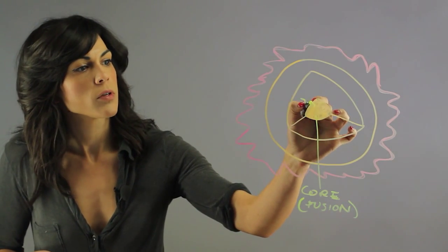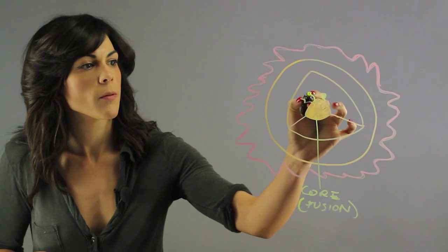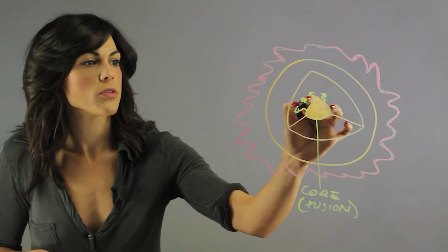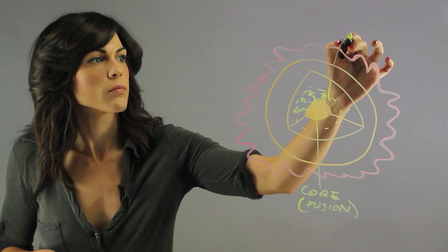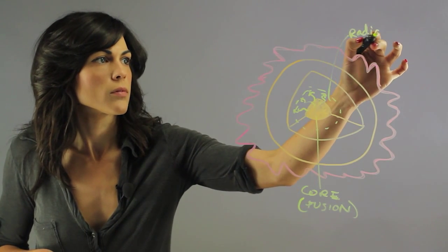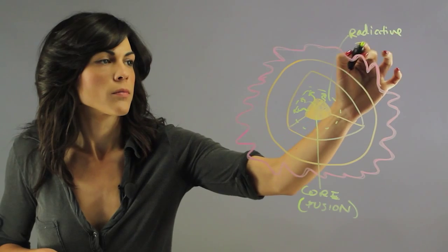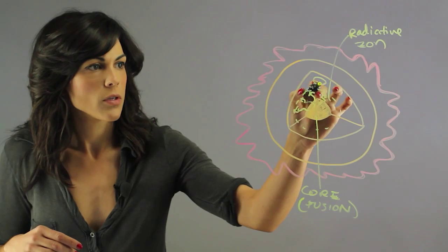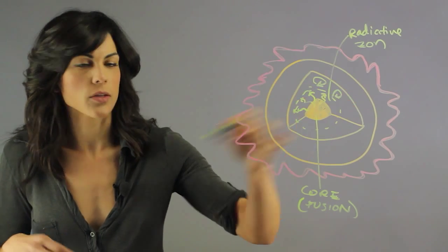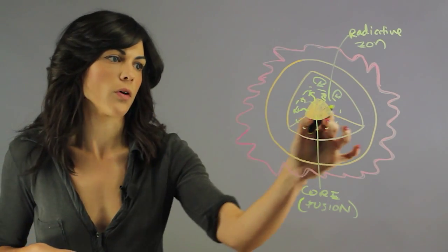It travels to the first zone which is the radiation zone, and then on top of the radiation zone you have a convection zone, and convection kind of looks like it rises and falls and rises and falls.